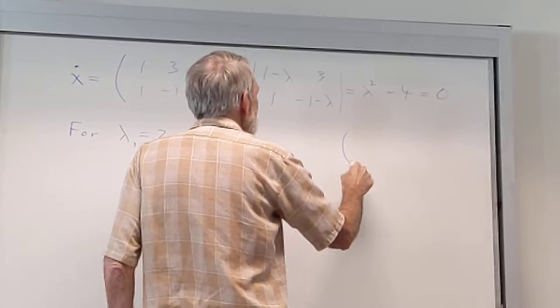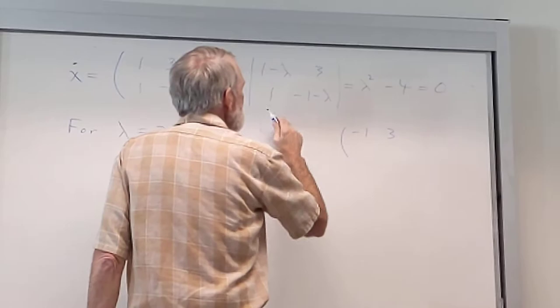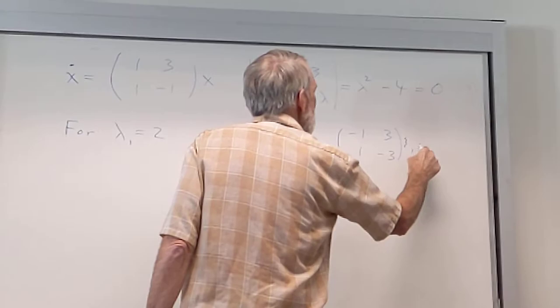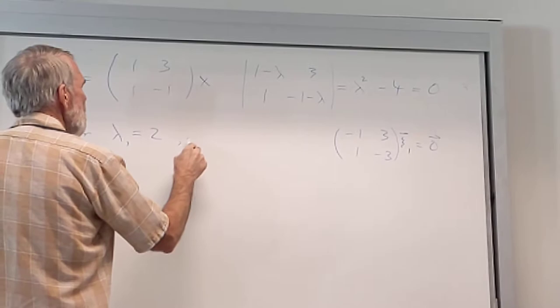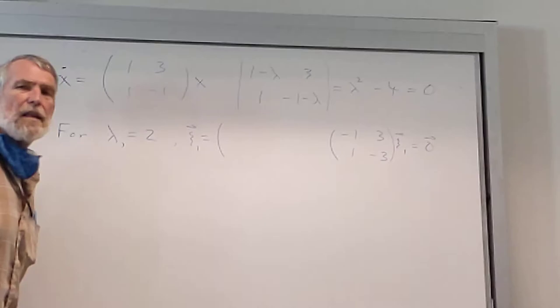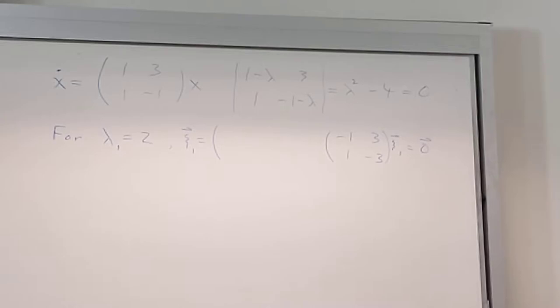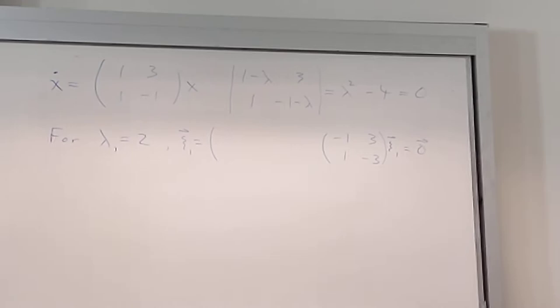Here's a side calculation, putting the 2 in there, we get minus 1, 3, 1, minus 3, x₁ equaling 0. Alright, so give me a good associated eigenvector that might work there. 3, 1 would be a good choice, right?